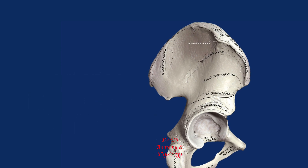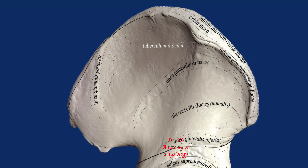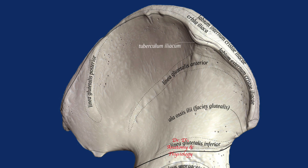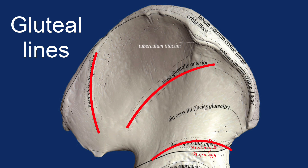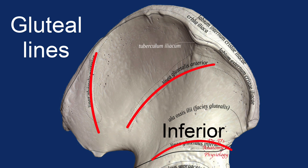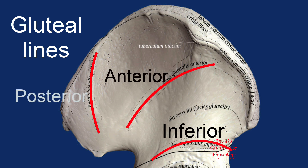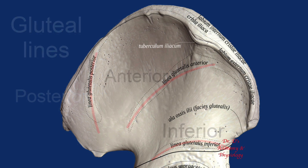If we look closely on the lateral surface of the ala, we can see subtle linear elevations called lines. These lines indicate where connective tissue that surrounds and separates the gluteal muscles attaches to the bone. These red lines roughly indicate where the actual gluteal lines are located. They are named according to their relative locations: the inferior gluteal line, the anterior gluteal line, and the posterior gluteal line. These lines indicate the boundaries for the attachment of the three gluteal muscles.